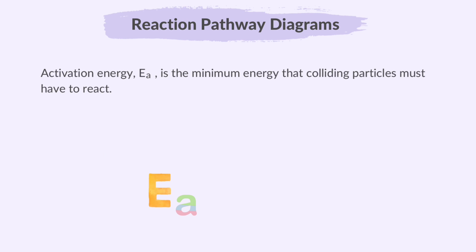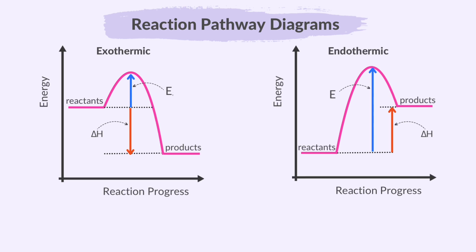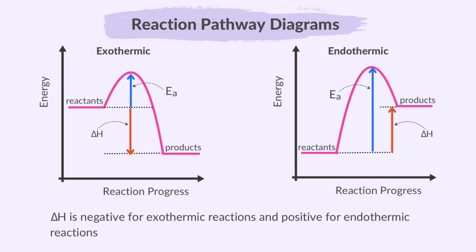The activation energy, or E sub A, is the minimum energy that colliding particles must have in order to react. The transfer of thermal energy during a reaction is called enthalpy change, symbol delta H of the reaction. Delta H is negative for exothermic reactions and positive for endothermic reactions.